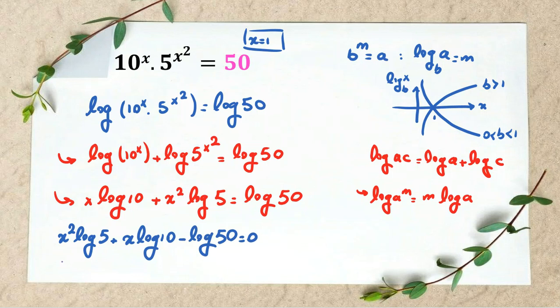So now we factorize. We write x, one part is x minus 1, because x equals 1 is one answer. When we factorize, one factor is x minus 1, then the other factor...